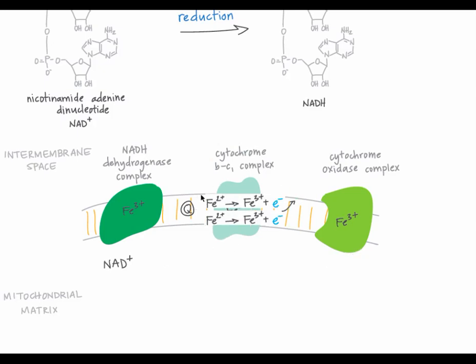The reduced iron 2 plus of cytochrome BC1 complex are oxidized back to iron 3 plus as they pass electrons to cytochrome C, another mobile electron carrier. Cytochrome C is oxidized back to its original form as it passes electrons off to iron 3 plus of cytochrome oxidase complex. Those iron 3 plus ions are reduced to iron 2 plus.